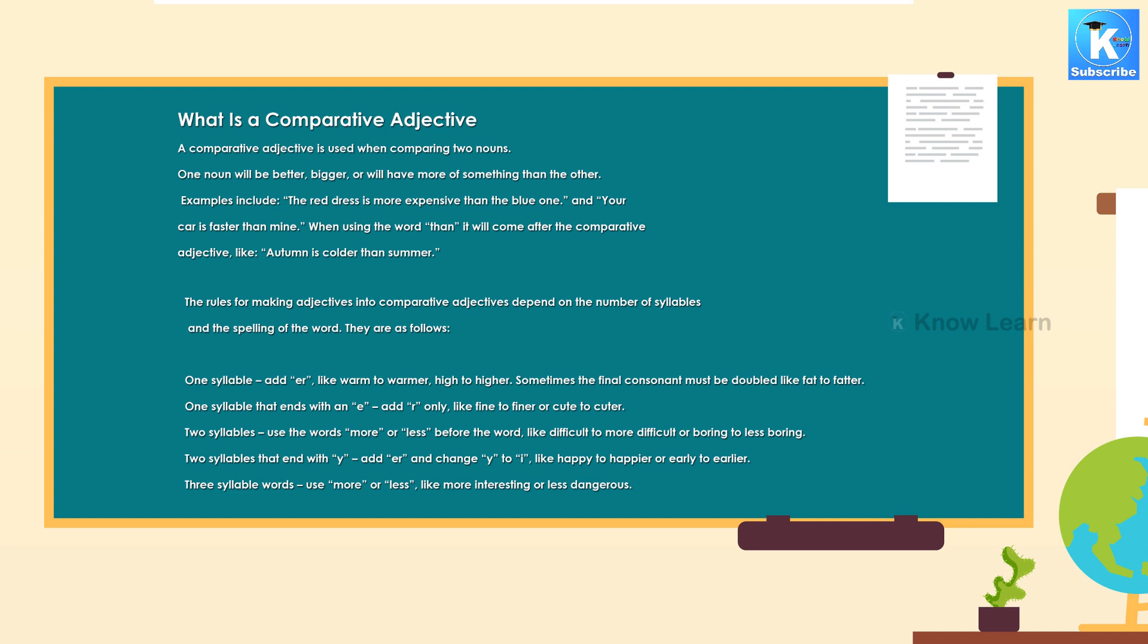When using the word then it will come after the comparative adjective, like autumn is colder than summer. The rules for making adjectives into comparative adjectives depend on the number of syllables and the spelling of the word. They are as follows: one syllable, add er, like warm to warmer, high to higher. Sometimes the final consonant must be doubled like fat to fatter.